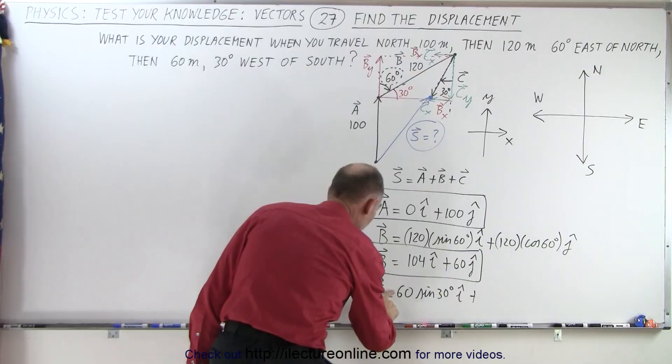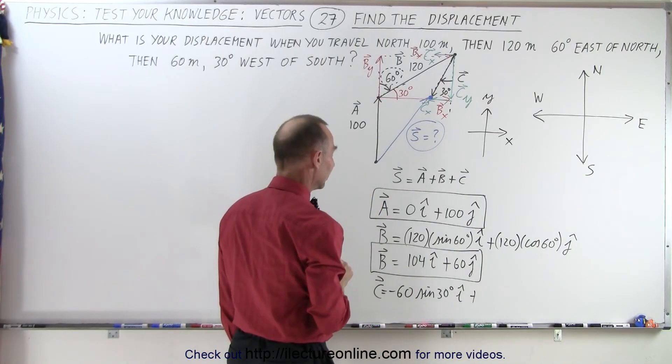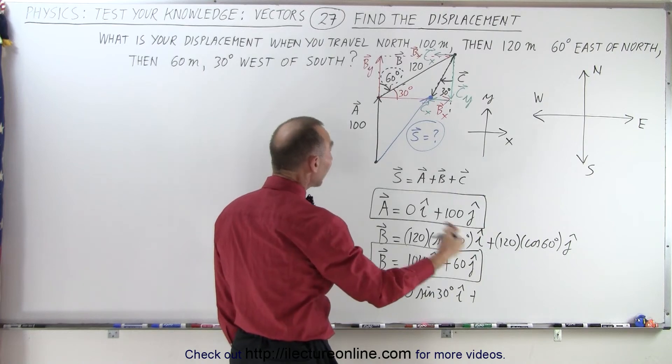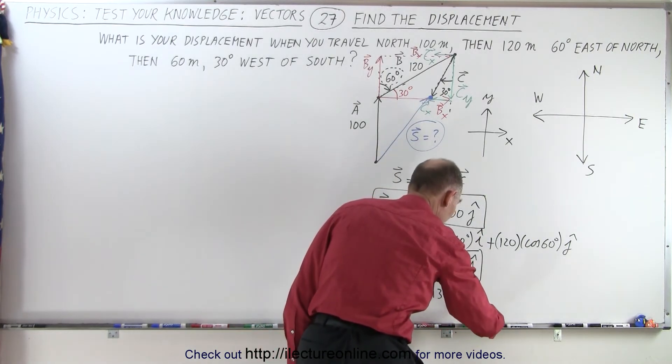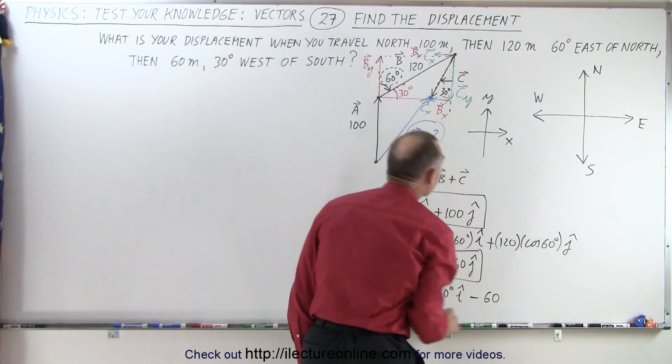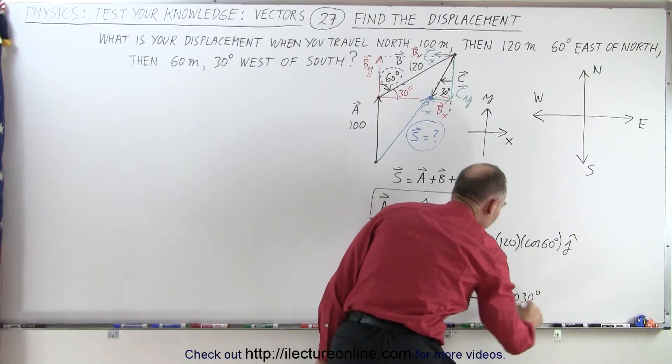It's in a negative direction, so we need a negative sign here. Negative 60 times the sine of 30 degrees, and the X component, that's X, and then the Y component is also negative, so let's make this negative. Negative 60 times the Y component is adjacent, that would be the cosine of 30 degrees.